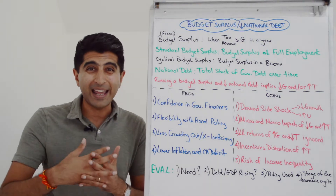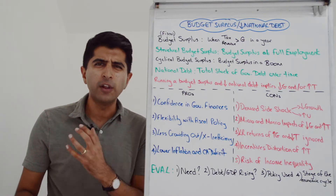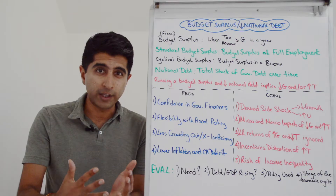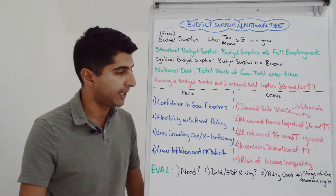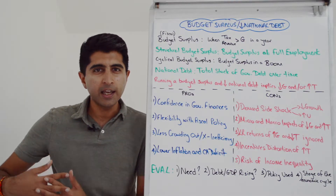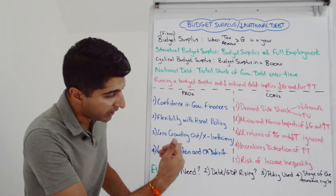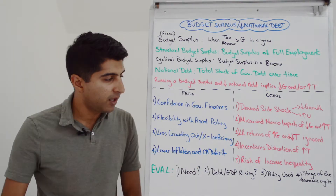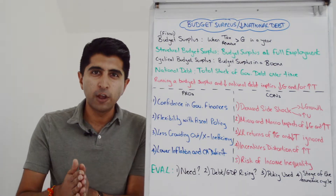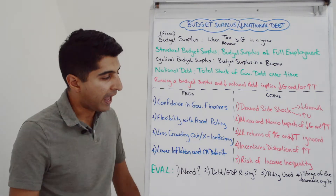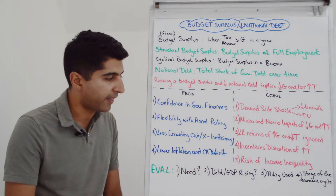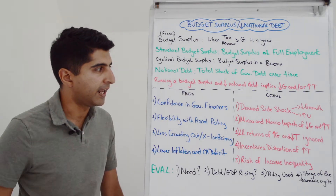There'll also be less X-inefficiency and less wasteful spending, given that governments often let costs get out of control when it comes to infrastructure projects in particular. And if these policies do reduce aggregate demand, we could see lower demand-pull inflation and improvements in our current account deficit — lower AD means lower incomes, which could mean lower spending on imports. So there are macro-objective benefits, in theory, that can come from a reduction in AD.